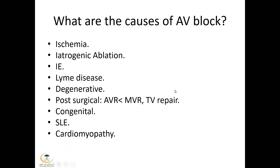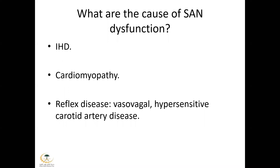AV block types: first degree AV block is prolonged PR interval more than 200 milliseconds. Second degree — Mobitz type 1 (Wenckebach) has progressive PR prolongation then a dropped beat. Mobitz type 2 has a fixed PR interval with sudden dropped beats, or 2:1 block. Third degree AV block has no association between QRS and P-waves with junctional escape rhythm. Causes of AV block include ischemia, iatrogenic post-ablation, infective endocarditis, Lyme disease, degenerative changes, post-surgical, congenital, systemic lupus, and cardiomyopathy.